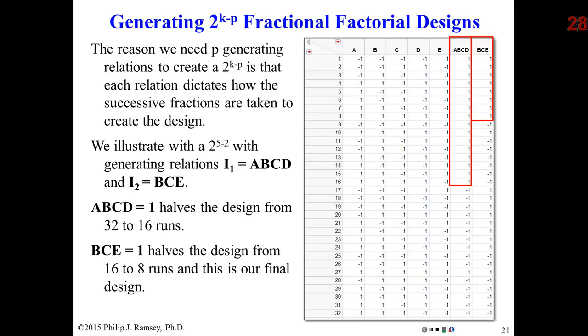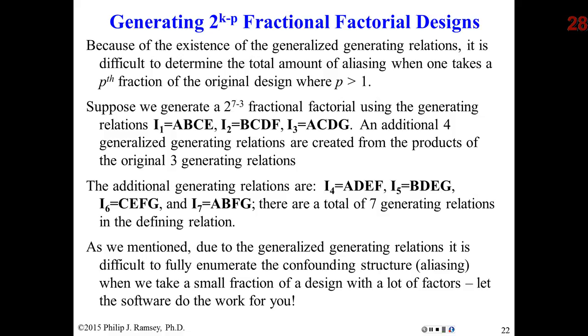So here's a 2 to the 5th minus 2. Again, there's many ways to split the design. So here's one approach. I split on the 4-way interaction. So I take the 16 runs where ABCD equals 1. And then I split those in half on BCE. And that gets me to the 8 final runs. Again, there are many ways this could be split. This is a way that JMP selected. A different software package might pick an equivalent way to do it. But what they're doing is they're saying, well, this is really the best way to split the design. So there's an example of a 2 to the 7th minus 3. And I have three generating relations. And it turns out that there are four generalized relations or a total of seven. So figuring out what's aliased with what is very difficult. And again, in these days, we just rely on software to solve the problem for us.